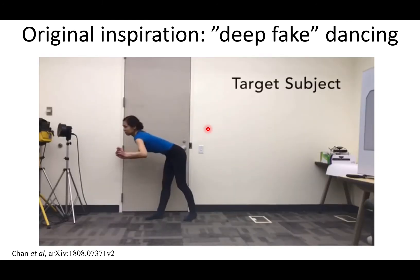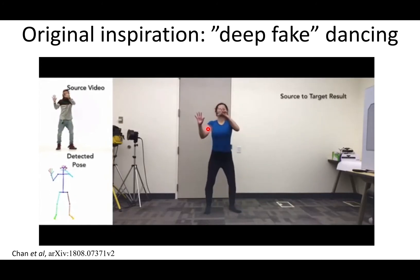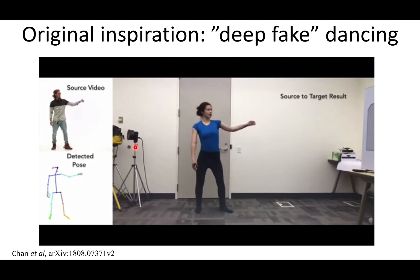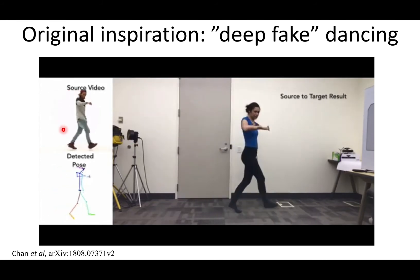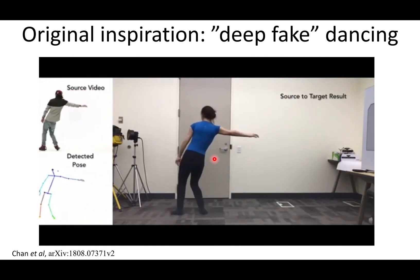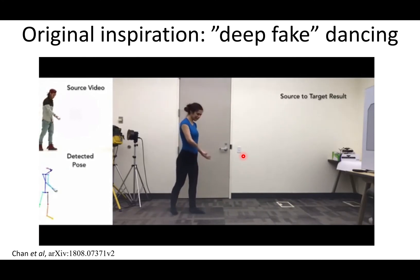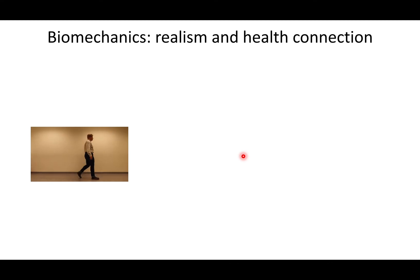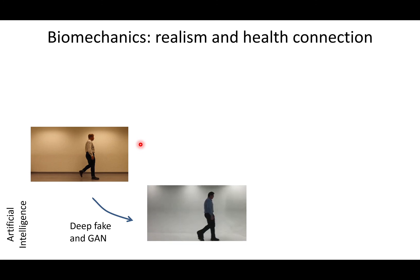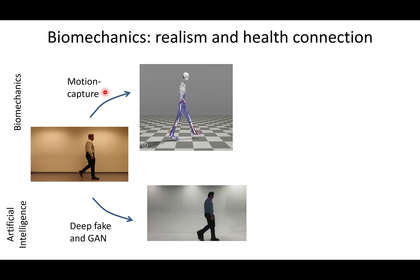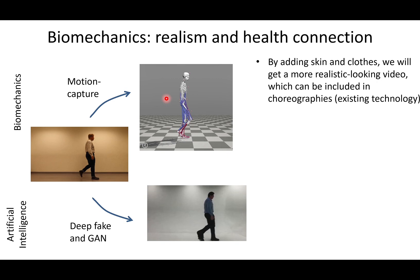To bring this into dance technology, we combine it with various tools that make it look like patients are moving. We have a professional dancer on the upper left where we detect the pose, then use artificial intelligence to make it look like another person — who has never danced those movements — is performing them. We also do biomechanics and motion capture, a more advanced version where you actually simulate what happens inside the body. By adding skin and clothes to the muscle simulations you get an even more realistic looking video, which can be included in choreographies.